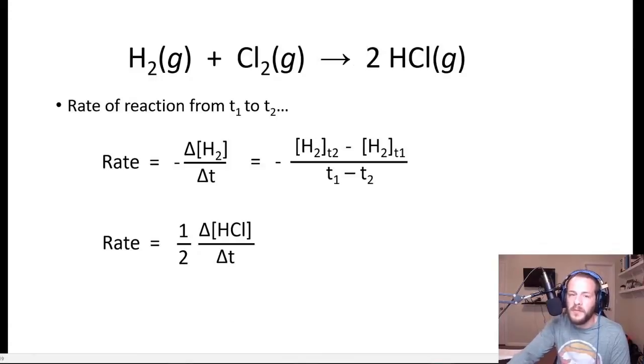So if we consider this chemical reaction here, where we have hydrogen gas reacting with chlorine gas to produce two moles of hydrogen chloride gas, if we wanted to calculate the rate of this reaction from an initial time to a final time, which I'm calling T1 and T2.